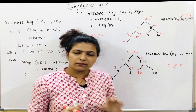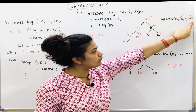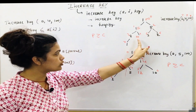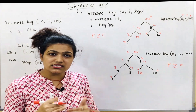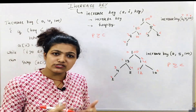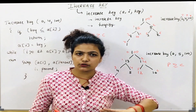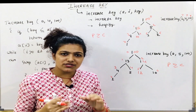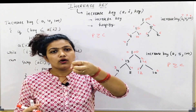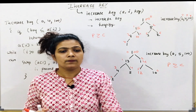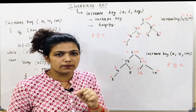So what is increase key? It is simple: given increase key with an array, a location, and a new value — put the new value at that location and apply the heapify operation. The heapify operation is explained in detail in the previous video on max heap operations.